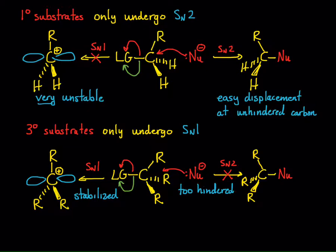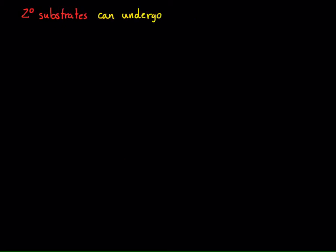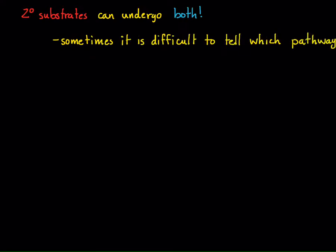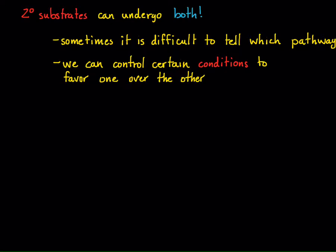Those are the cases for primary and tertiary alkyl halides. What about secondary? Secondary substrates can undergo both SN1 and SN2 mechanisms, and sometimes it is difficult to tell which pathway a reaction will actually undergo. There are ways we can determine that — we can look at the kinetics of a reaction, we can look at the stereochemistry. But the key point is that for secondary substrates, we can control certain conditions to favor one reaction mechanism over the other. When analyzing a problem with a secondary substrate and a leaving group, and you're asked to predict whether the mechanism is SN1 or SN2, you have to look at certain factors.